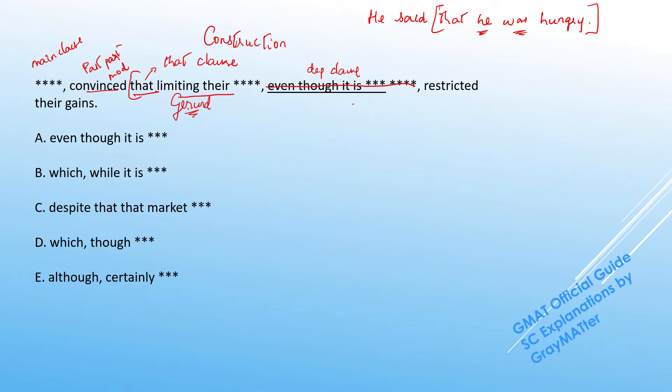This is one way in which you can actually get pretty efficient to deal with construction-based attacks. To see proper clauses, we can try to read around constructs between commas. So we can see that limiting their investments restricted their gains. So here restricted is the main verb and so that that clause is limiting their investments restricted their gains. So A's construction looks perfectly fine. Let's hold on to that.